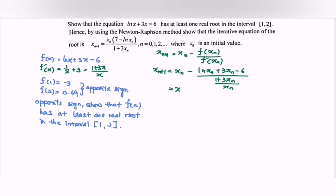So we have xₙ minus xₙ[ln xₙ + 3xₙ - 6] over [1 + 3xₙ].